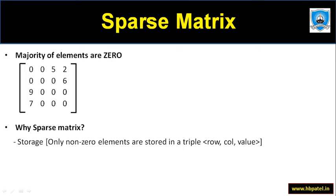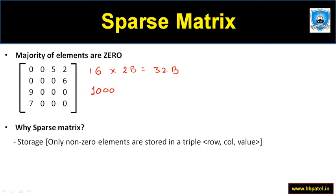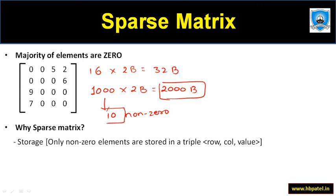Now why do we need to use sparse matrix? If we store all elements and there are 16 elements with every element requiring two bytes, that means we need 32 bytes. Suppose there are 1000 elements and out of 1000 only 10 elements are non-zero, but if we store everything including zeros, that is 1000 elements multiplied by two bytes equal to 2000 bytes. But we know that out of 2000 bytes only 10 elements are important — all others are zero. So when we want to store only non-zero elements — the row, column, and value — we can use a sparse matrix.